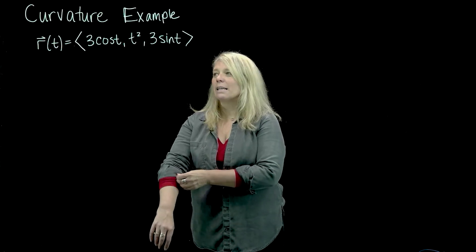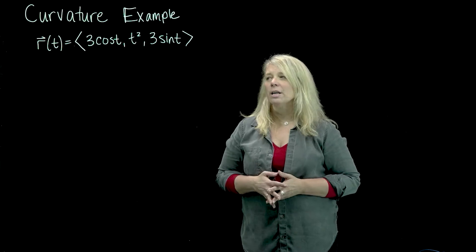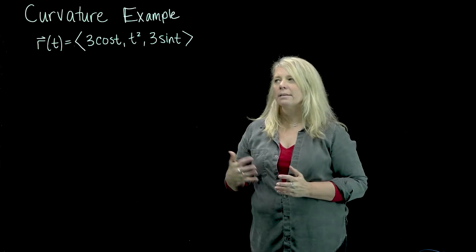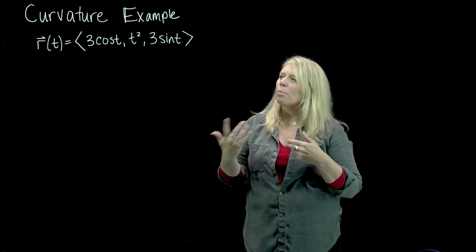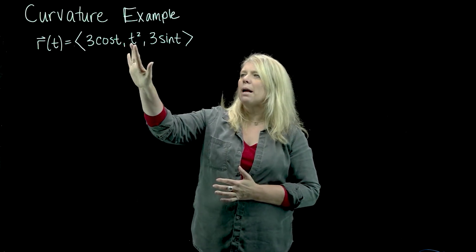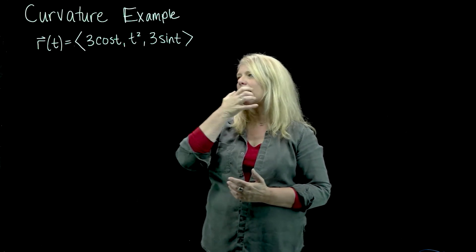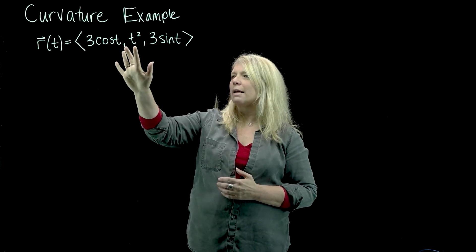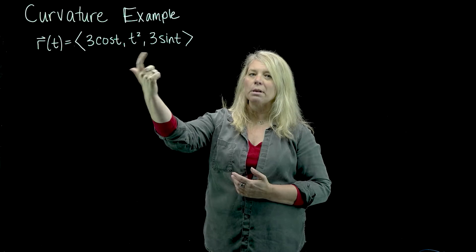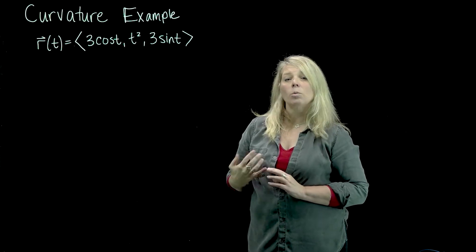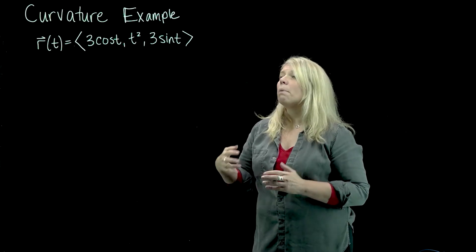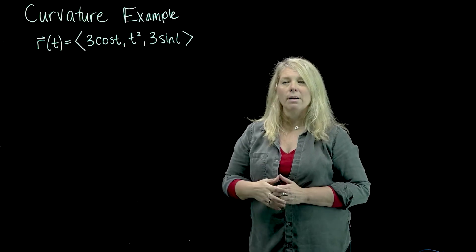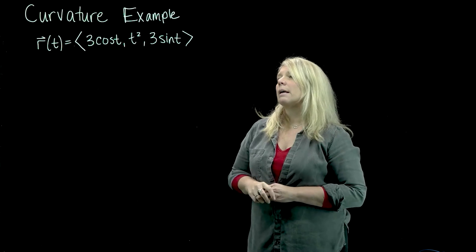In this video we're going to look at an example calculating curvature. I've got an equation up here and this is a pretty familiar example, except you might notice when we looked at a similar equation before, I had a 3 cosine t, a t, and a 3 sine t. I've replaced that j component function with a t squared here, partly so that we could look at something that has some interesting things going on with curvature in particular.